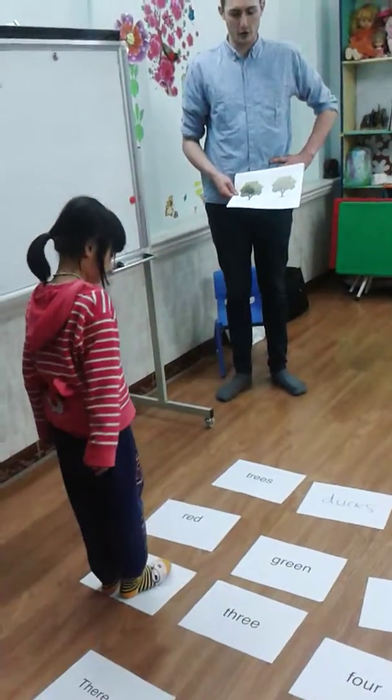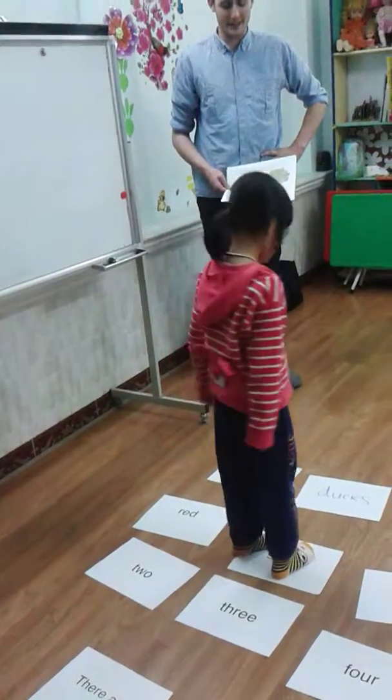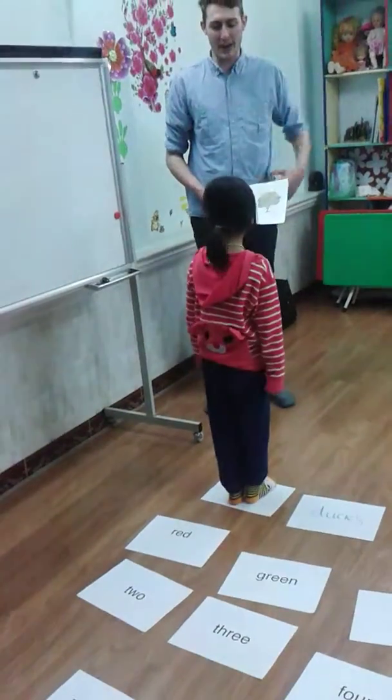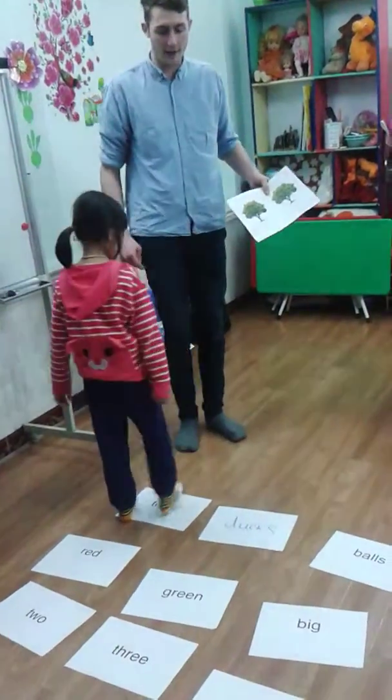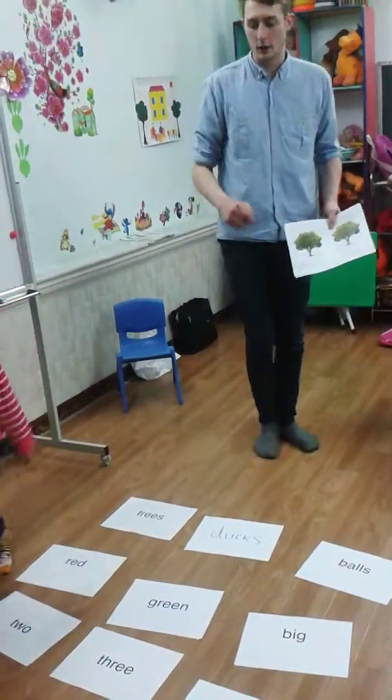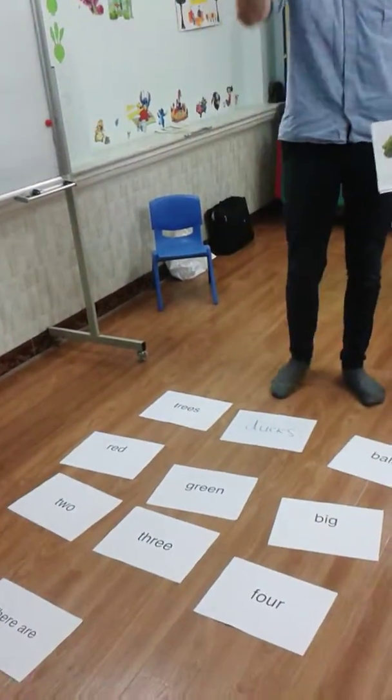There are two green trees. Good. Excellent. Sorry Daisy, do it one more time. Every time you stand, you say 'There are two green trees.' Say it. Ready?